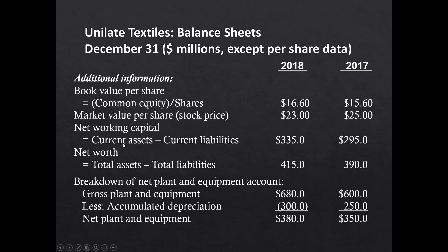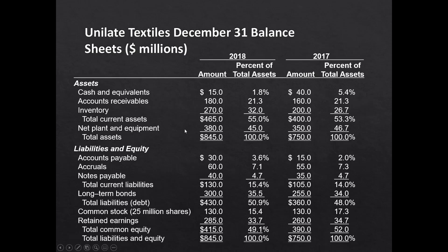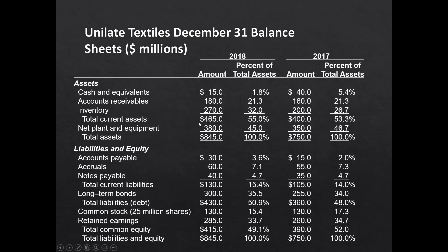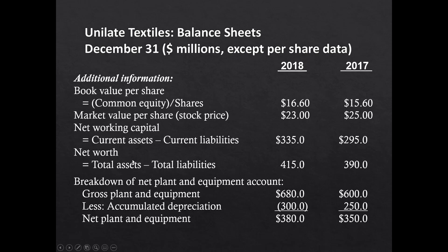Net working capital is current assets minus current liabilities — essentially cash, accounts receivable, and inventory minus accounts payable, accruals, and notes payable. Current assets are generally converted to cash within the next year; current liabilities are paid within the next year. Unilate's net working capital is $335 million in 2018 versus $295 million in 2017.